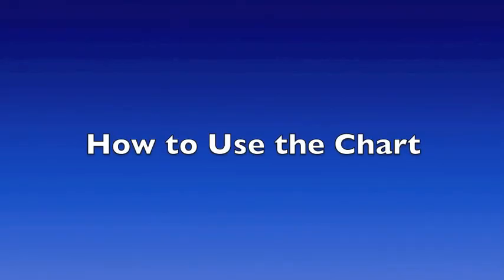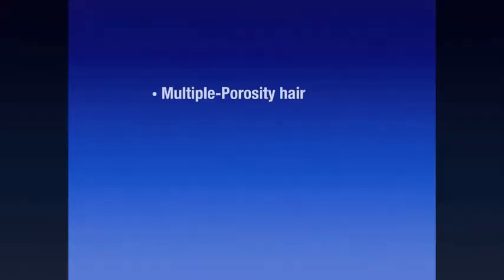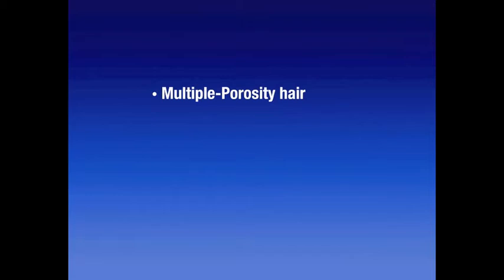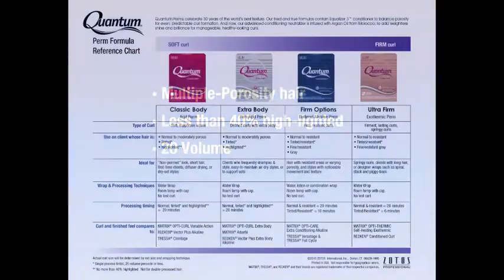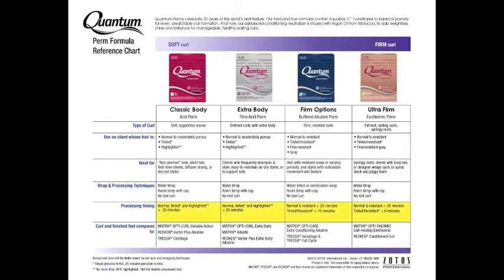Here is an example of how to use the chart. During our preliminary consultation, we determined that we were working with multiple porosity hair. The hair is less than 40% highlighted using 20 volume. Look at the processing time area on the chart — what perms are appropriate to be used on highlighted hair less than 40% using 20 volume? Both Quantum Classic Body and Quantum Extra Body are in those categories.